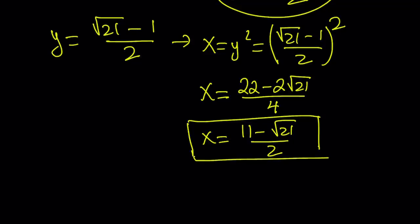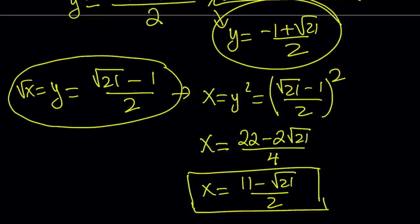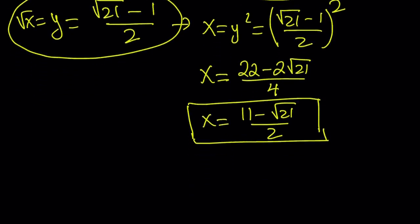Divide by 2, and write it as 11 minus square root of 21 divided by 2. So that is the x value we are going to be using. And we also have a value for the square root of x, because remember, y is equal to square root of x. So those are the two values that I will be subbing into my expression. I'm supposed to evaluate x plus 5 over square root of x.